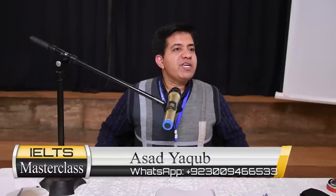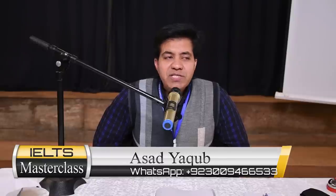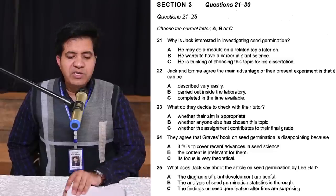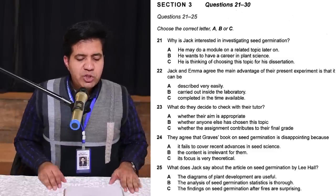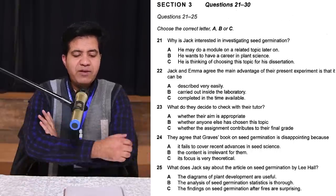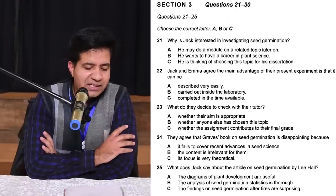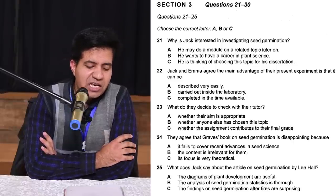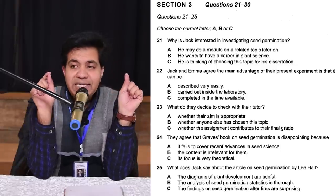Okay, now we have Section Three. Section Three has two question types: multiple choice questions and matching. We've also got sentence completion, so we'll do both. Section Three, question 21: choose the correct letter A, B, C, or D. 'Why is Jack interested in investigating seed germination?' So underline 'seed germination.'